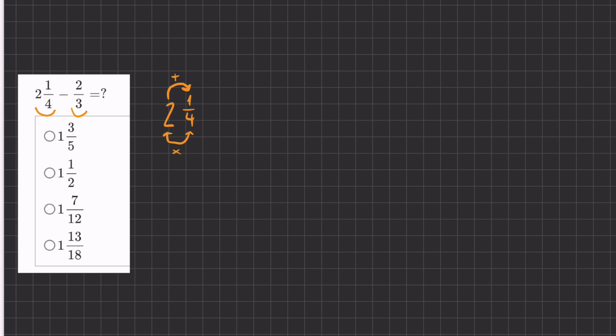So it's going to look like this. We're going to have 4 times 2 plus 1 and that's going to become our numerator and then we're going to keep our denominator the same. So this is going to turn into 4 times 2 is 8 plus 1 that's 9 over 4.